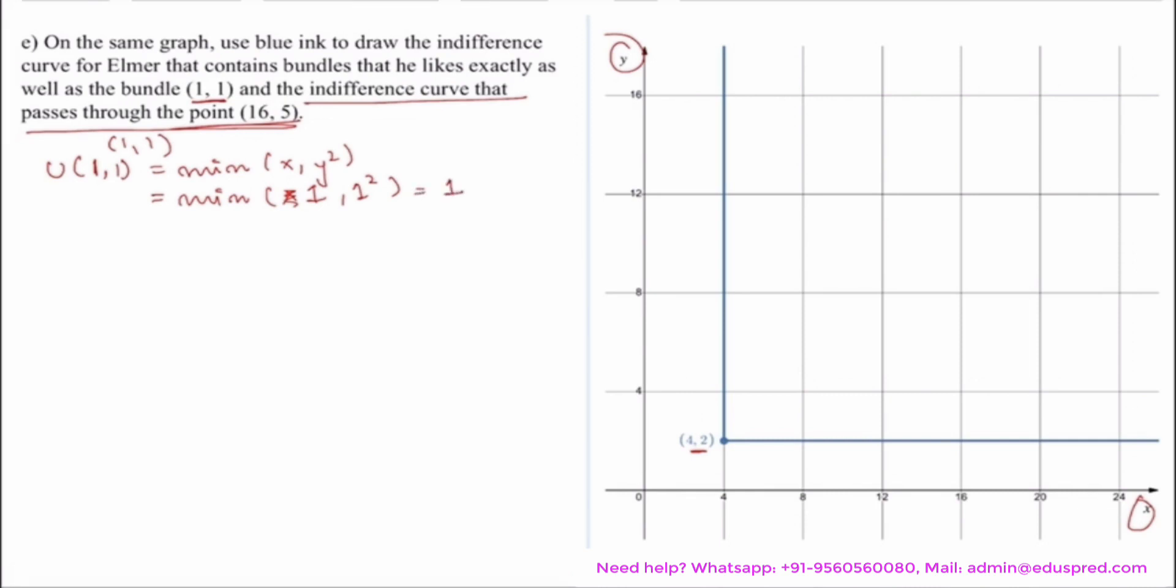Now, note that in case of minimum functions or perfect complement functions, there is a rule that the kink would always lie where this value is equal to this value. So my x should be equal to y squared and the utility at this point should also be equal to the utility I am getting from my entire indifference curve. So I want this should be equal to 1.